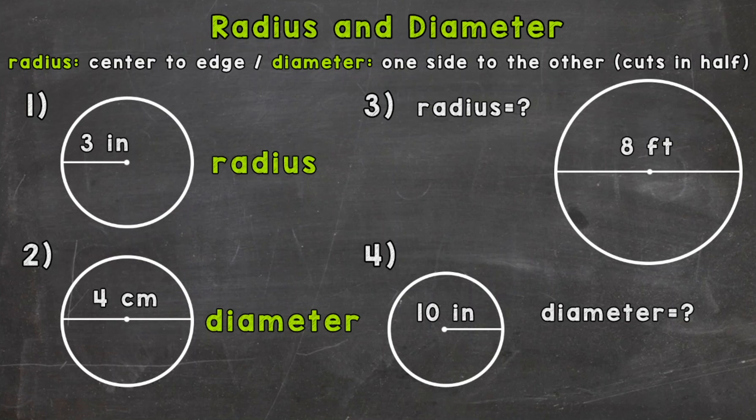Let's hop right into number one and talk a little bit more about radius. The radius is the distance from the center of the circle to the edge. For number one, we have an example where the radius, or distance from the center to the edge, is three inches. The radius is the center to any point around the edge of the circle.